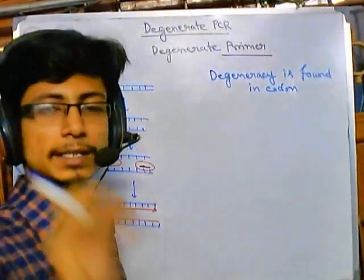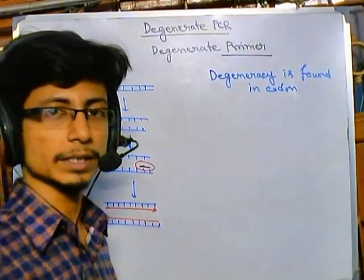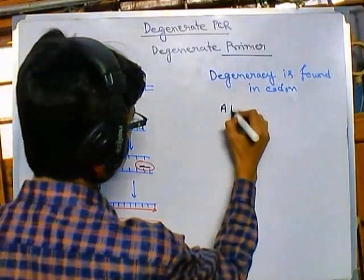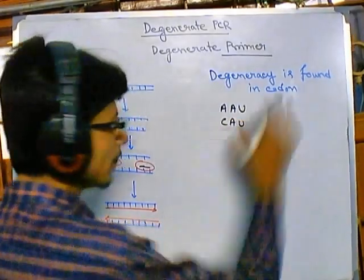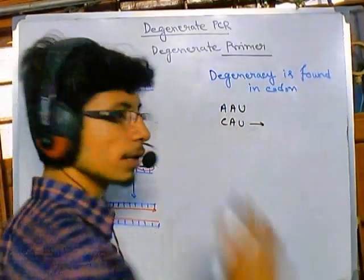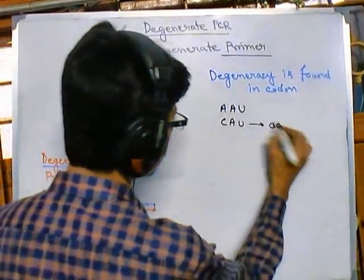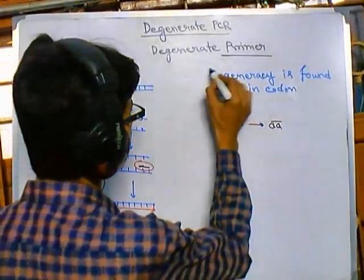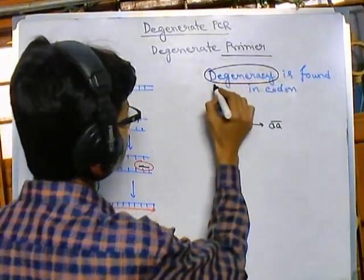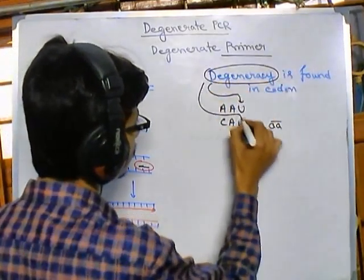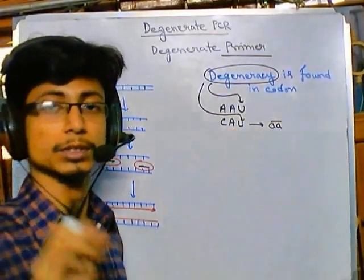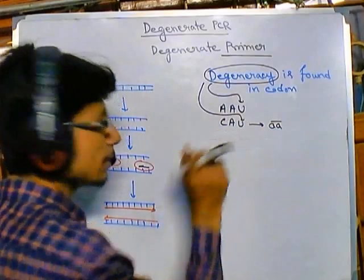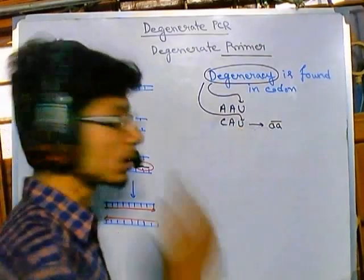A codon is a three-nucleotide sequence that codes for an amino acid. There are many different codons, and each codon codes for a particular amino acid. An important feature is that codons have degeneracy in their third position — meaning the third nucleotide can vary while the rest remains constant.